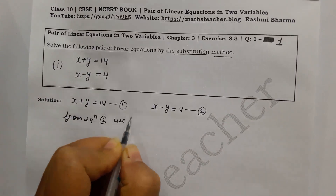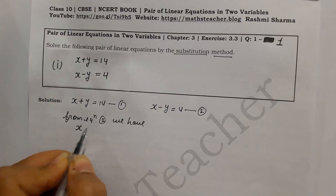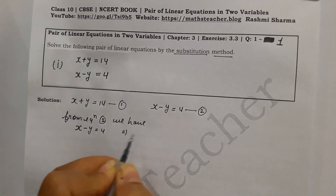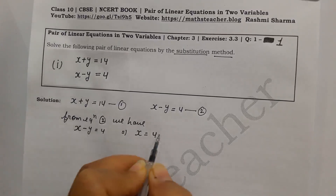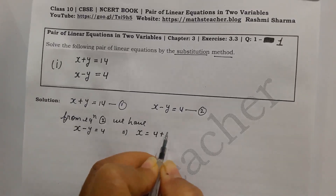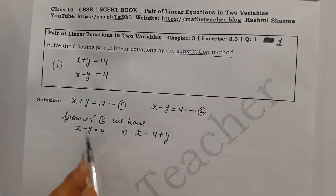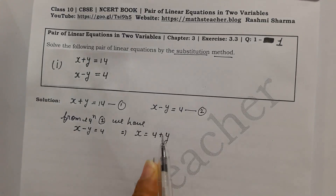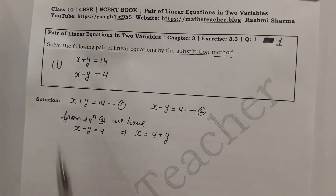From equation no. 2: x minus y equals 4, so this implies x equals 4 plus y. Here we write one variable in terms of the other variable. So x equals 4 plus y. Now we can easily put this value into equation no. 1.